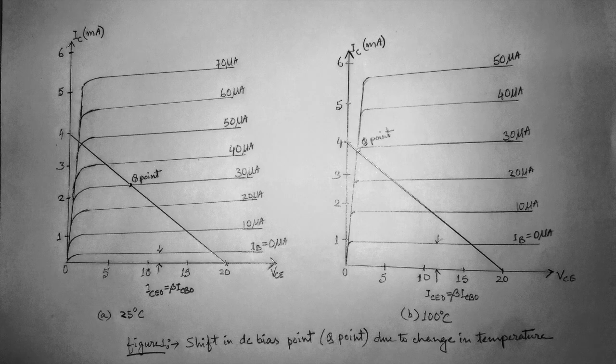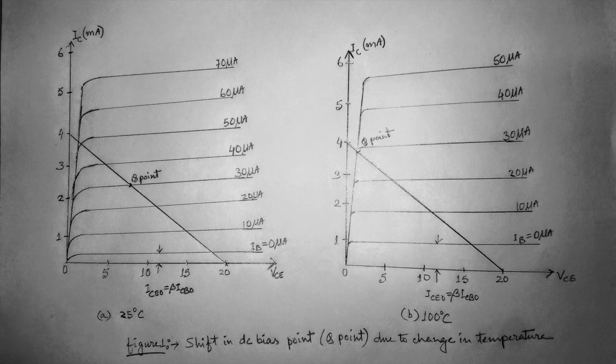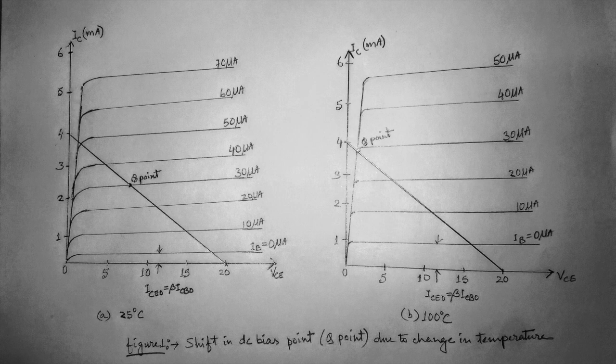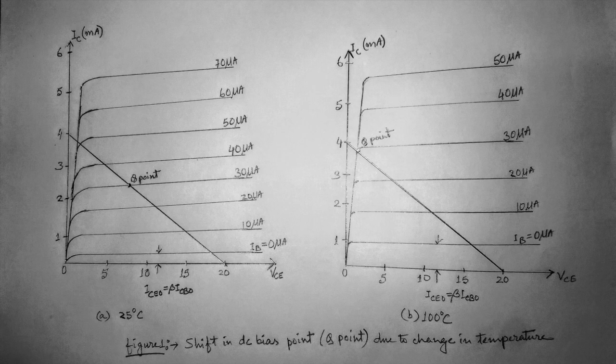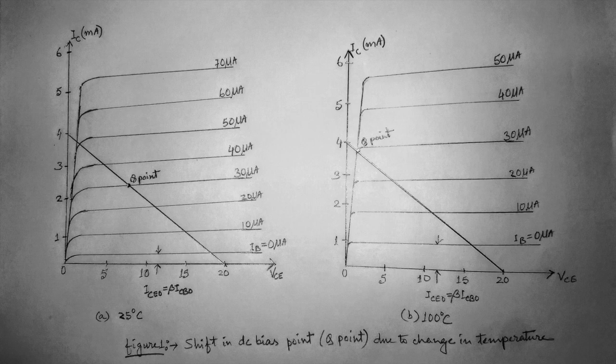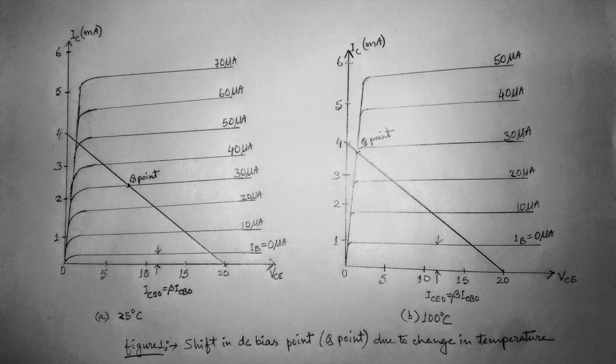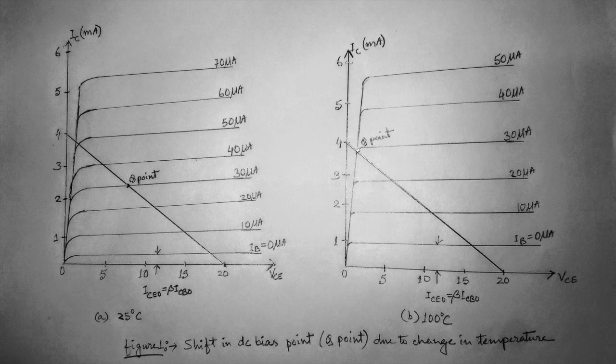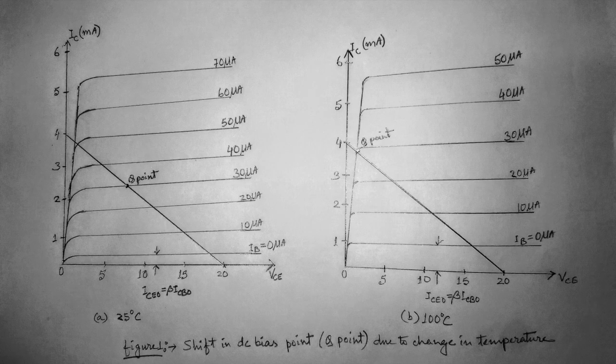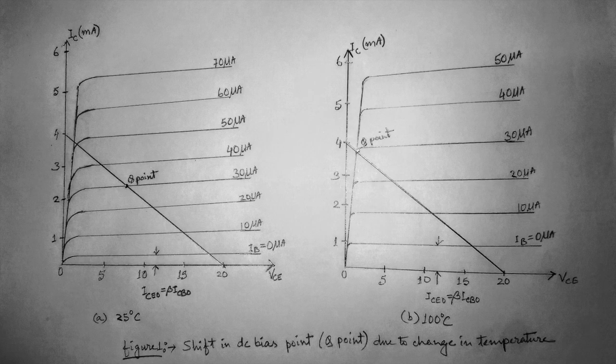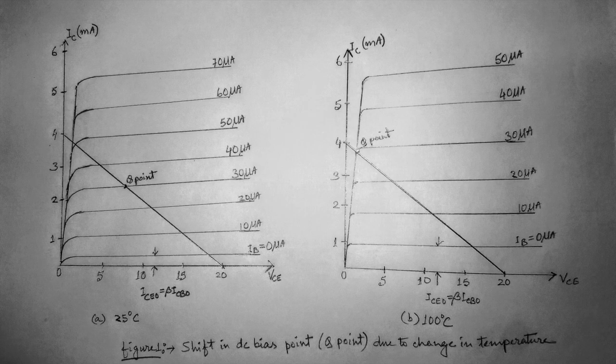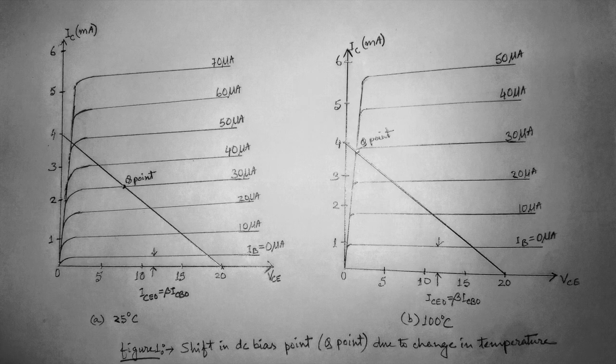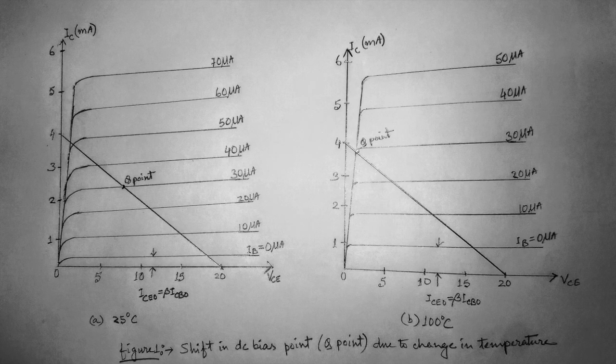Figure 1A and B shows common emitter collector characteristics and the effect of changes in leakage current and current gain on the DC bias point. It shows how the transistor collector characteristics changes from temperature of 25 degree Celsius to a temperature of 100 degree Celsius. Note that the significant increase in leakage current not only causes the curves to rise, but also an increase in beta, as revealed by the large spacing between the curves.